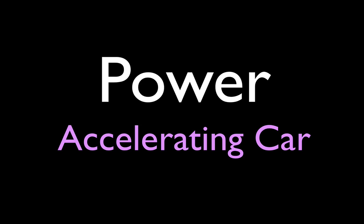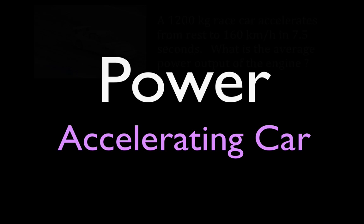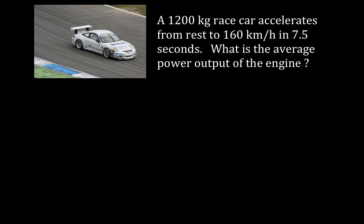In today's video we are going to calculate the power output of a car that is accelerating, and we're going to do this problem three different ways. You can see there are three different ways you can look at power: work, energy, velocity, and acceleration. We have a 1200 kilogram race car that accelerates from rest, so its initial velocity is zero, to 160 kilometers per hour over a time of 7.5 seconds. We want to know what is the average power output of the engine to do that, and we're going to assume uniform acceleration.